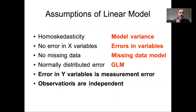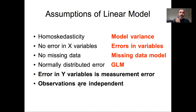Hierarchical models are also one way of addressing the assumption that observations are independent, by allowing us to acknowledge that observations coming from a specific measurement unit — a plot, a block, a watershed, a year, a lake — may be more like each other than they are like other measurement units.